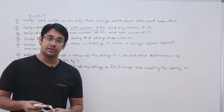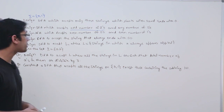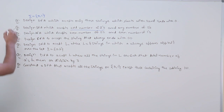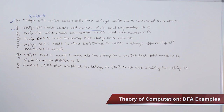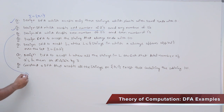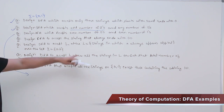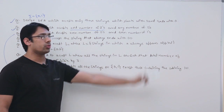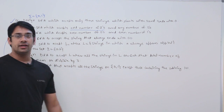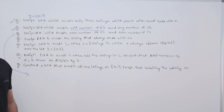Now let us do the next part. We have already done question number 1 and 2. So now we design a DFA which accepts even number of zeros and even number of ones. This is slightly tricky as compared to the first two questions.